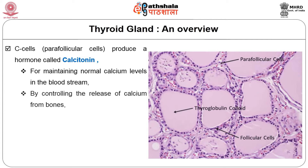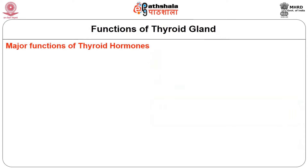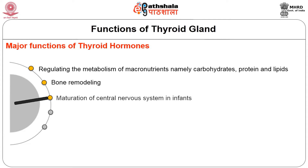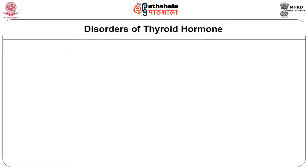The other cells, called C cells or parafollicular cells, which are less abundant than follicular cells, produce a hormone called calcitonin. This is essential for maintaining normal calcium levels in the bloodstream by controlling the release of calcium from bones and excreting calcium through urine with the help of kidneys. The functions of the thyroid gland include regulating the metabolism of macronutrients — carbohydrates, protein, and fat — bone remodeling, maturation of the central nervous system in infants, maintenance of normal body temperature, and helping with growth and maintenance.